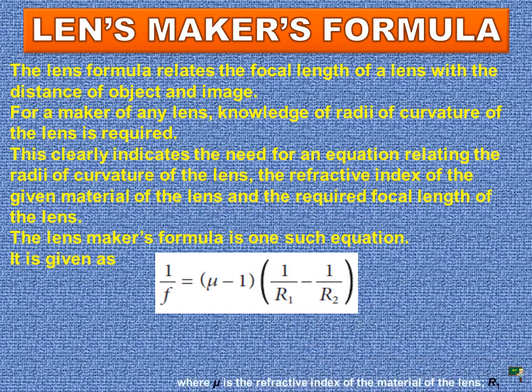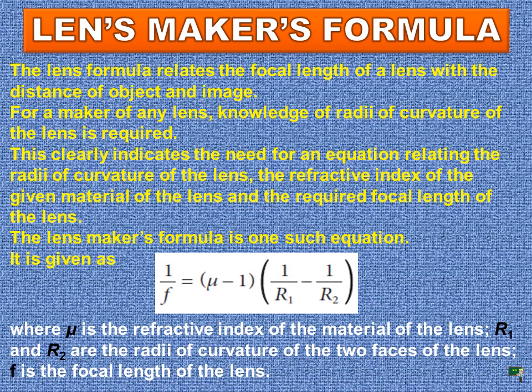Here, μ is the refractive index of the material of the lens, R1 and R2 are the radii of curvature of the two faces of the lens, and F is the focal length of the lens. Remember, the lens maker's formula is applicable only to thin lenses. In the case of thick lenses, this formula will need some modification.